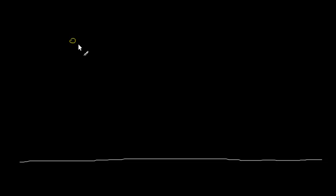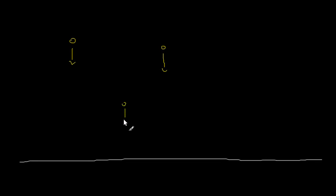Let me start this topic by introducing the idea of a gravitational field. Suppose this is the ground and I have a ball there. There is a force of gravity that pulls it down. Now suppose I bring the ball here, some distance away — there is also a force of gravity that pulls it down. I bring the ball there, force of gravity pulls it down. So at any point, say around this part above the ground, there would be a force.